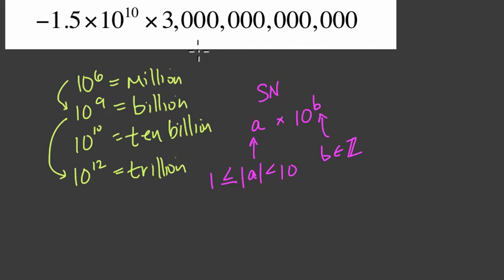If we rewrite 3 trillion over here, right, millions, billion, trillion, we get what? We get 3 times 10 to the power of 3 places, 6 places, 9 places, 12 places, right? This is 3 times 10 to the 12th. And we established that before, right? 10 to the 12th is trillions.